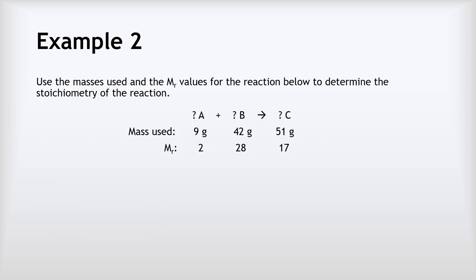Our second example is quite different. There's no single set type of stoichiometry problem, but if you keep in mind the basic principle of ratio and finding things in terms of ratios of moles, you'll always be in a good place. This question says: use the masses and MR values for the reaction below to determine the stoichiometry. We've got A and B reacting together to make C, with question marks for coefficients. If we find the moles of A, B, and C and simplify the ratio into whole numbers, that gives us our coefficients.